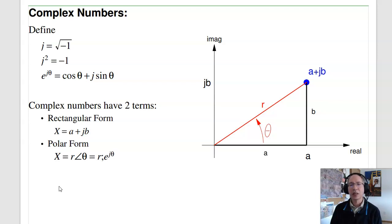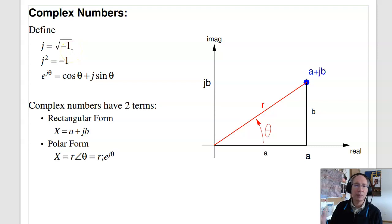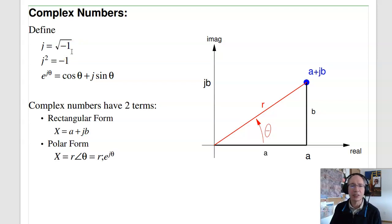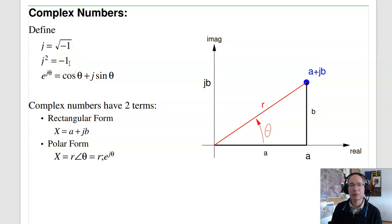The heart of complex numbers is the concept of J. In math they call it I, but for us I means current, so electrical engineers call it J. J is the square root of minus one, meaning that J squared is minus one.